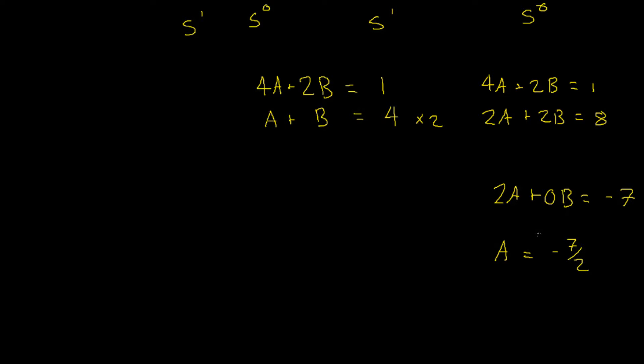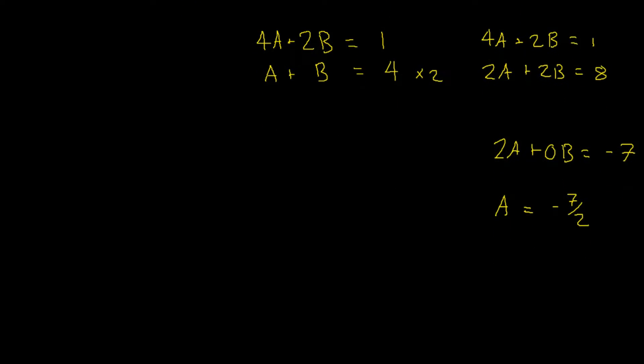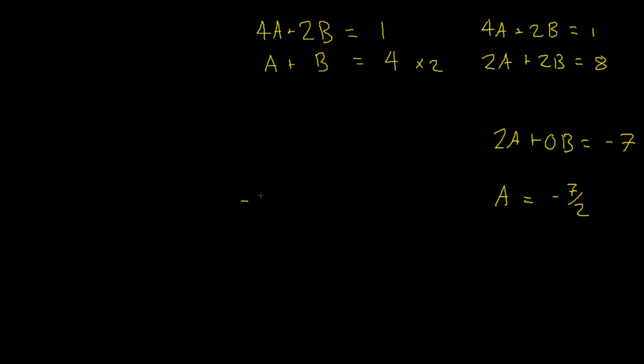We can then plug A equals negative 7 halves into our second equation and then solve for B. Let's do that now. Negative 7 halves plus B equals 4. We can then add 7 halves to both sides, which would give us B equals 15 over 2.